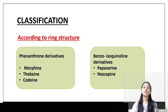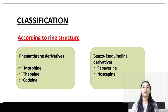Next, we will see the classification of morphine. According to ring structure, there are two categories: Phenanthrene derivatives and Benzoisoquinoline derivatives. Phenanthrene derivatives include morphine, thebaine, and codeine. Benzoisoquinoline derivatives include papaverine and noscapine.